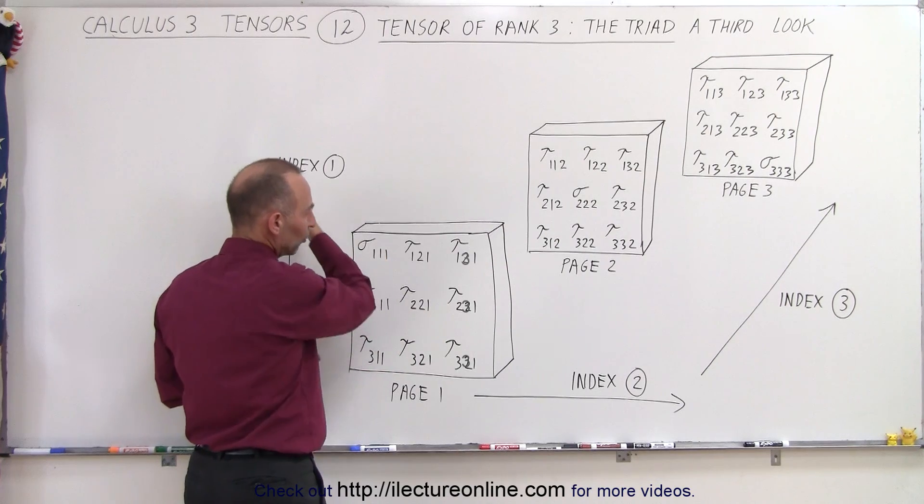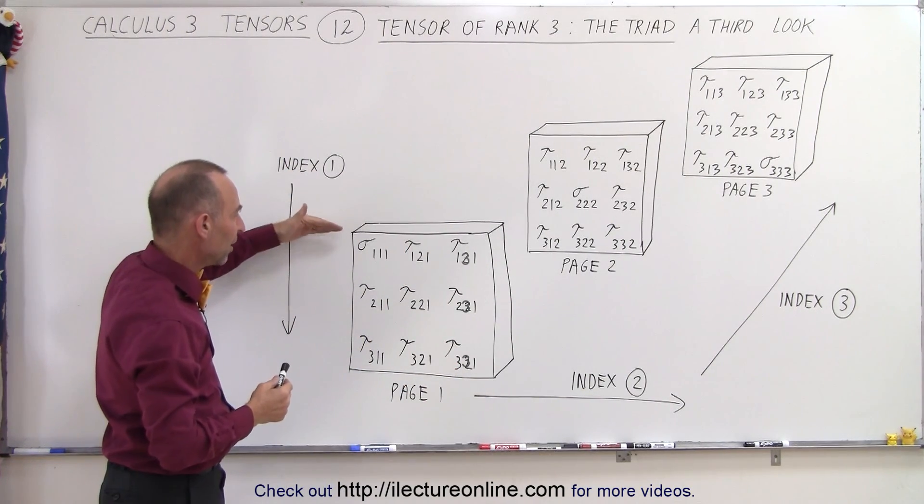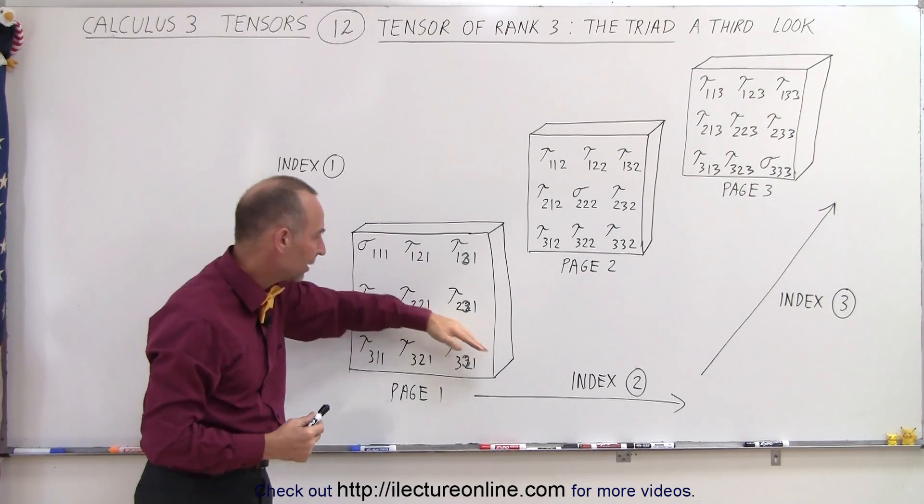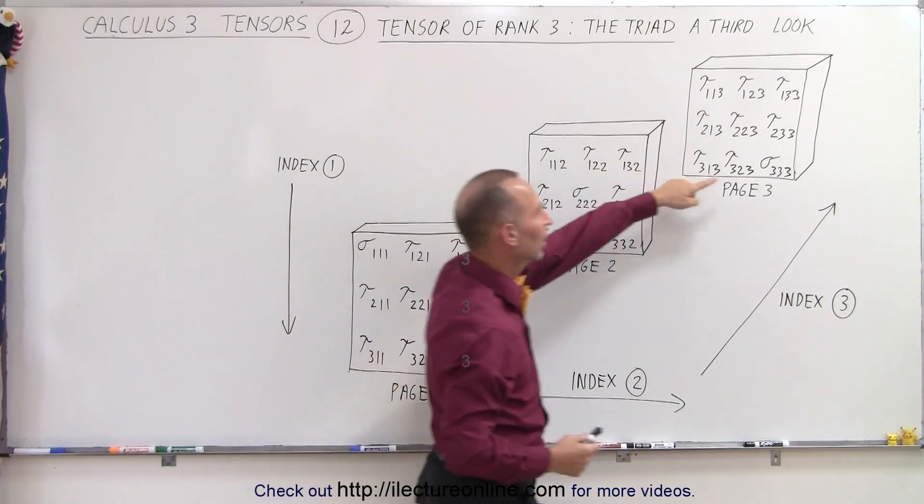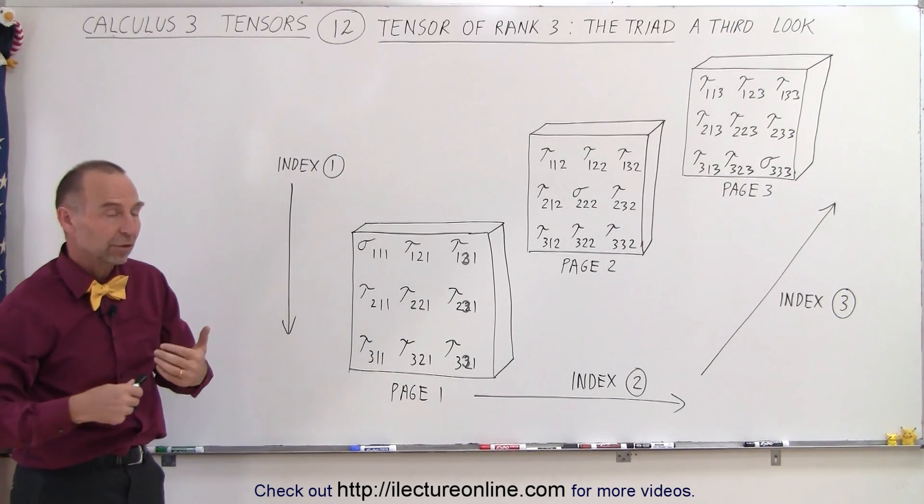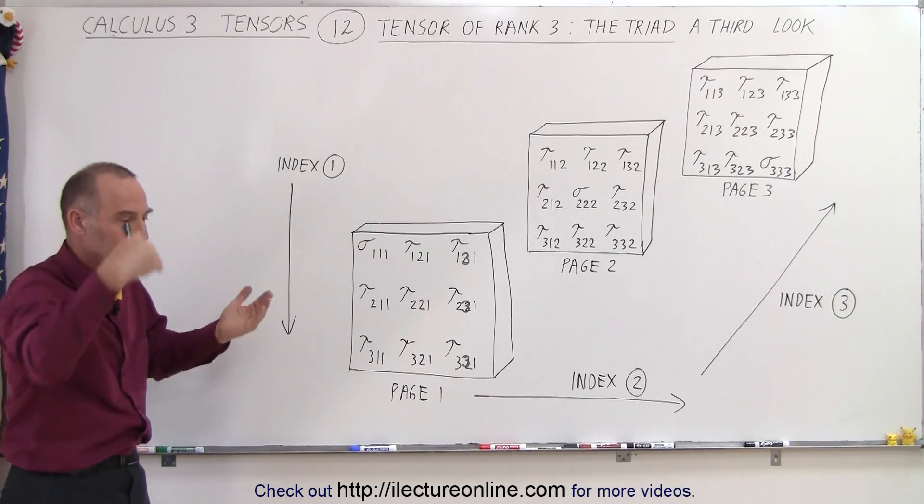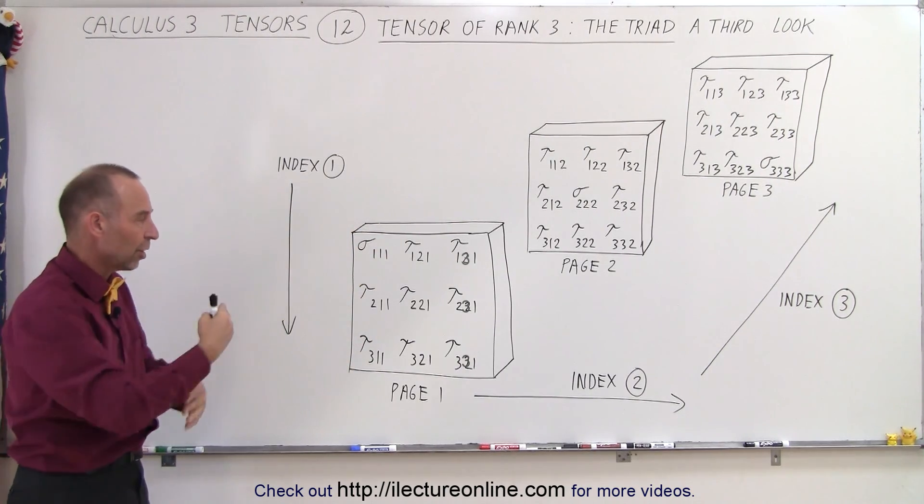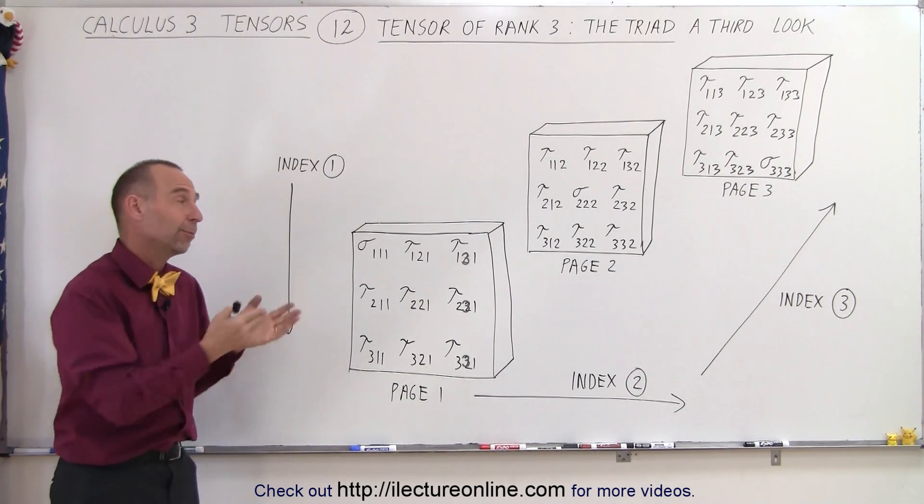So across the diagonal from the top front left corner to the back bottom rear corner, we have the diagonal line where the indices are the same - three ones, three twos, and three threes. Of course those represent something special, especially when we're dealing with stress tensors. We know that's the direction that's perpendicular to the surface, then we have the shear stresses that are all in different directions along the surface of the object. But we'll get into that when we see some examples of how to apply this to a stress tensor.